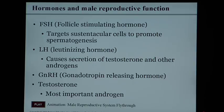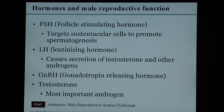Male reproductive hormones: FSH — follicle stimulating hormone — targets sustentacular cells to promote spermatogenesis. LH causes secretion of testosterone and other androgens. Gonadotropin-releasing hormone also helps with sperm production. Testosterone is the most important androgen — it assists in sperm production and gives men their primary and secondary sex characteristics.